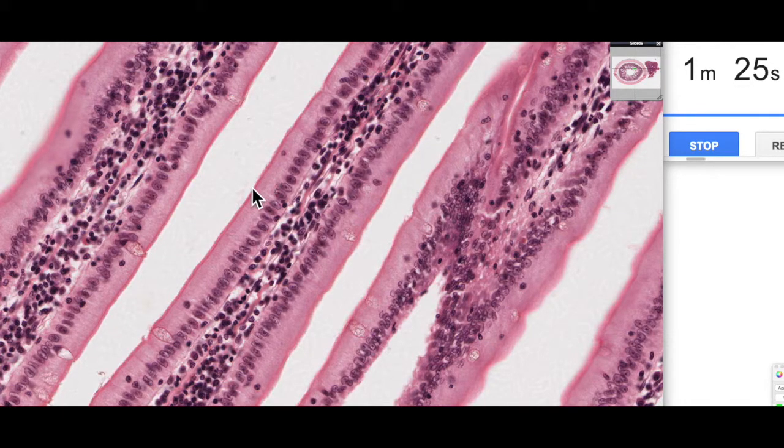You might notice that along the surface here we've got this very acidophilic little border. This is referred to as a brush border and represents the microvilli on the surface of these absorptive cells. They're acidophilic for two main reasons. One is they tend to have digestive enzymes associated with their cell membranes, and enzymes are proteins that stain with eosin. The other reason is that in the core of each microvillus is a core of actin or microfilaments, and actin is a protein that also stains with eosin.